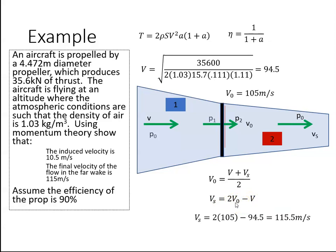So we just calculated V0 to be 105 here. V was 94.5. We were given that in the question. When I do that calculation, I get Vs to be 115.5 meters per second.